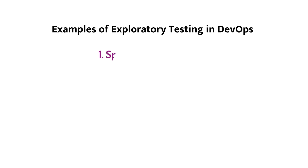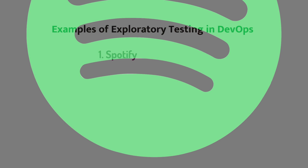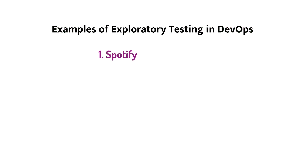Let's see some real-time examples of exploratory testing in DevOps. Spotify uses exploratory testing as part of their continuous delivery process to ensure that their software meets user needs and expectations. By using exploratory testing, Spotify can identify defects and usability issues early in the development cycle, which helps to reduce the overall cost of software development.